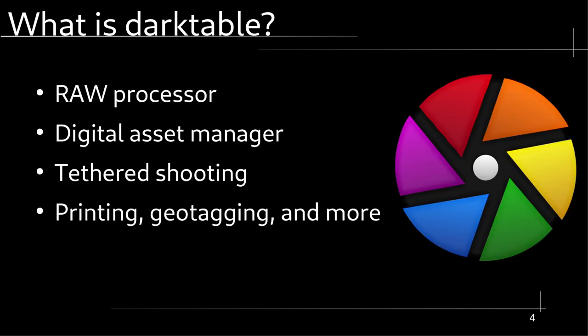What is Darktable? It is a raw processor which takes raw data from your camera — a file type that's not really an image yet — and converts it to an image. It's also a digital asset manager with a light table featuring star ratings, color labels, tagging, tethered shooting through gPhoto2, printing, geotagging, and more. A note: if you geotag your photos, please strip that information before uploading online.